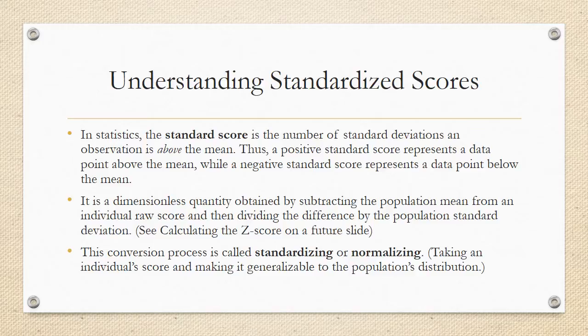It is a dimensionless quantity obtained by subtracting the population mean from an individual raw score and then dividing the difference by the population standard deviation. Now we're going to talk about this in a few slides and tell you exactly how to calculate something like that. But this process, this conversion process, is called standardizing, normalizing, or normalizing. You're taking an individual score and then making it generalizable to the population's distribution.